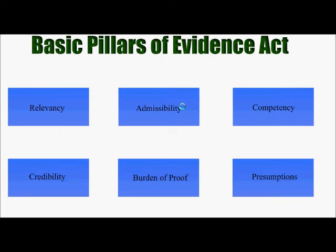Presumptions are of three kinds primarily: may presumption, shall presumption, and conclusive proof. May presumption means the court has discretion under certain circumstances to either believe or not believe. Shall presumption is a direction given by the law, upon proof of a particular fact, to believe a particular thing as true, and the burden rests upon the other side to disprove it. Conclusive proof means once directed by the Act, the court shall conclusively prove a particular fact and shall not allow any evidence to rebut it. These are the basic pillars of Indian Evidence.